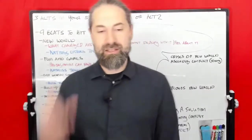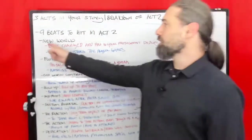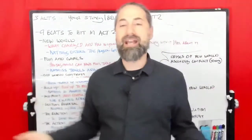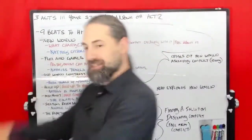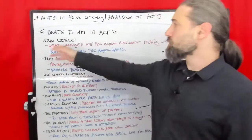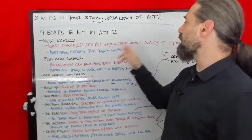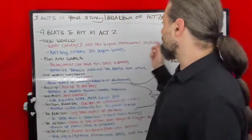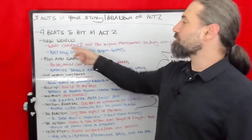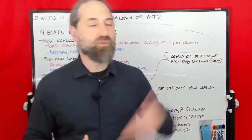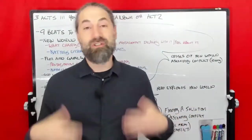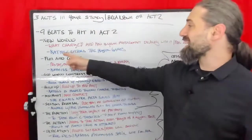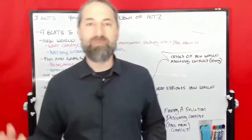The first section of Act 2 is Crisis of a New World. The three beats are: New World, Fun and Games, and Old World Contrast. Remember, Act 1 ends with the protagonist being thrust into the New World. So we want to understand — in this New World, what has changed, and how is your protagonist dealing with or feeling the value of being pushed into it? It could be internal, external, whatever you want. For example, Katniss enters the Hunger Games — that's the New World she's being thrown into, coming from her town.